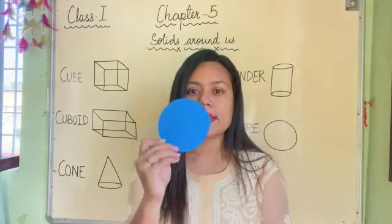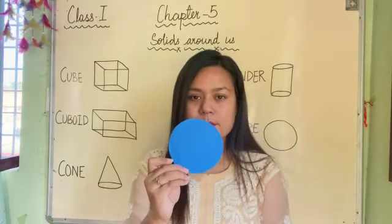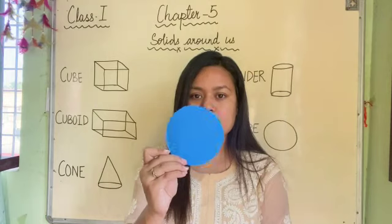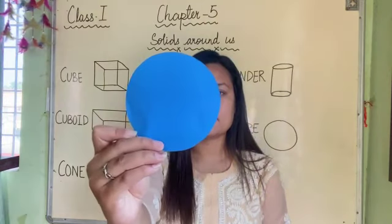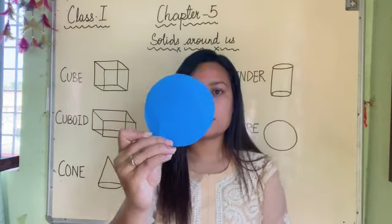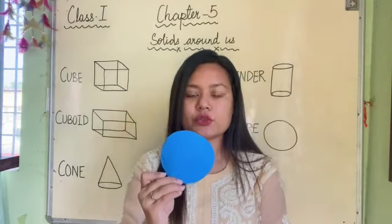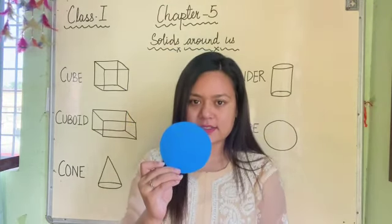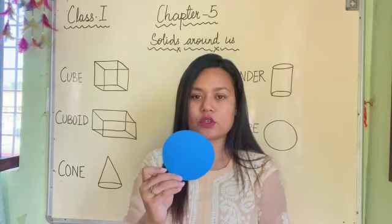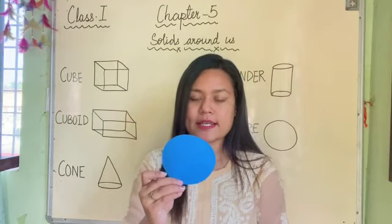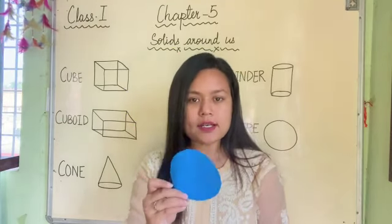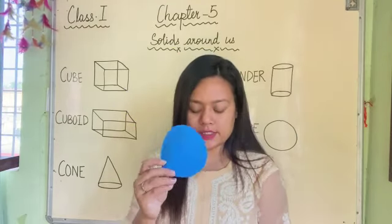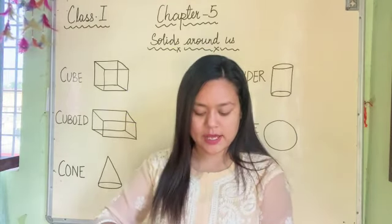Now, can you guess which shape is this? Which shape is this, children? Circle. Very good. Which shape is this? Circle. Very good.